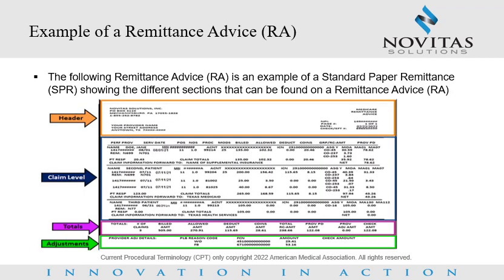Example of a remittance advice. The following remittance advice is an example of a standard paper remittance showing the different sections that can be found on a remittance advice. For example, the header, claim level information, totals, and adjustments.